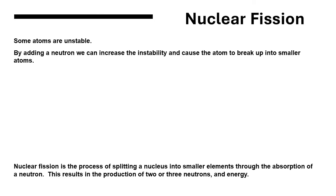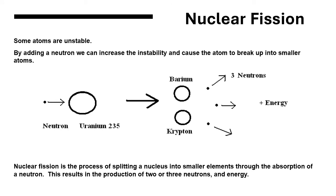However, if we add a neutron to the unstable atom, then we increase its instability, and this can cause the atom to break up into smaller atoms immediately. Nuclear fission is the process of splitting a nucleus into smaller elements through absorbing a neutron.